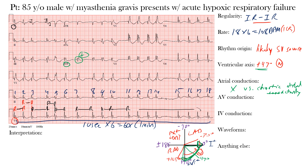Moving on to atrioventricular or AV conduction: again, we have no clear P waves, so there's no clear PR interval and therefore no clear AV nodal conduction. Remember, the PR interval runs from the beginning of the P wave to the beginning of the QRS complex — without a visible P wave, we cannot assess a PR interval.